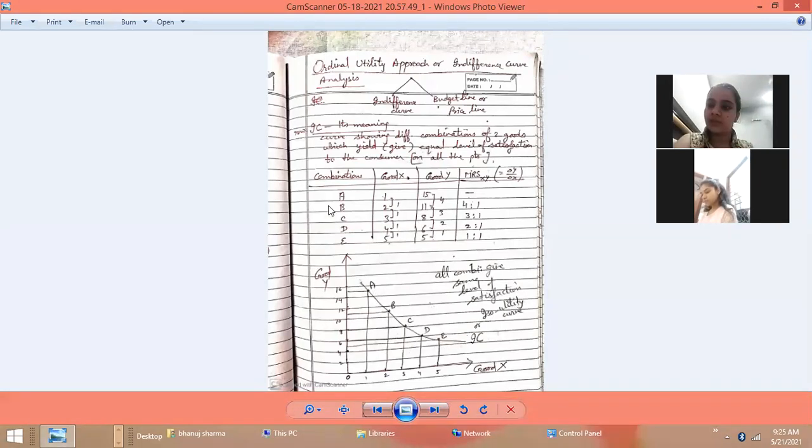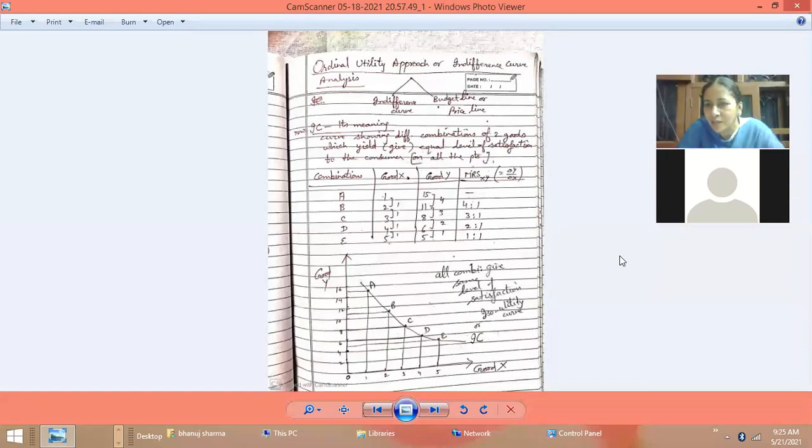These points are showing these combinations on the curve. Point A is expressing A combination because it has 1 unit of X and 15 of Y. Points B, C, D - all have some X and some Y. When we take both goods, these are our combinations. Every time X changes by one unit.